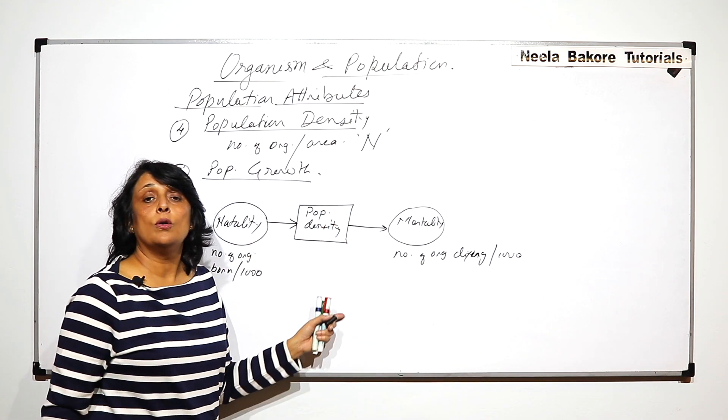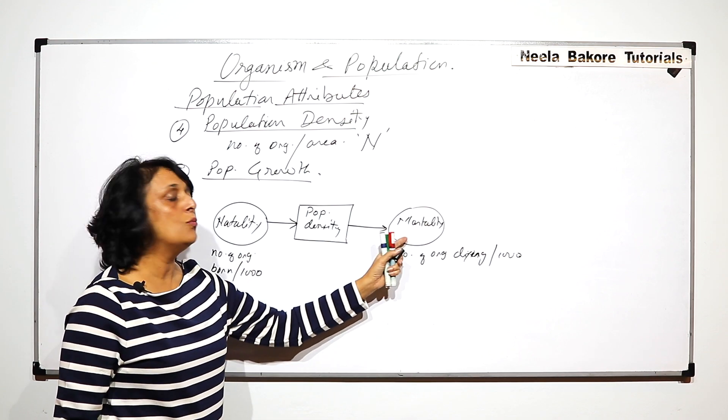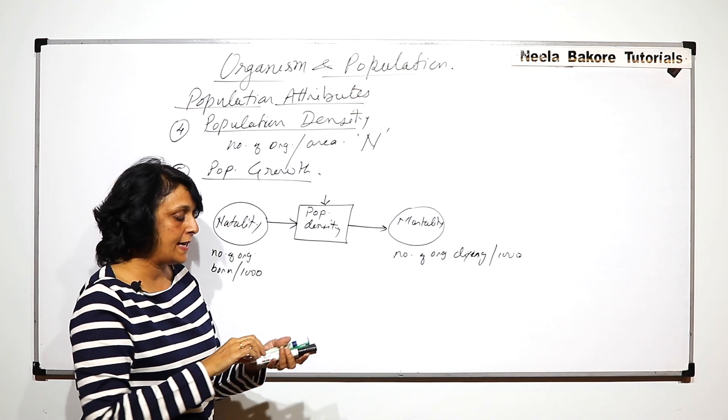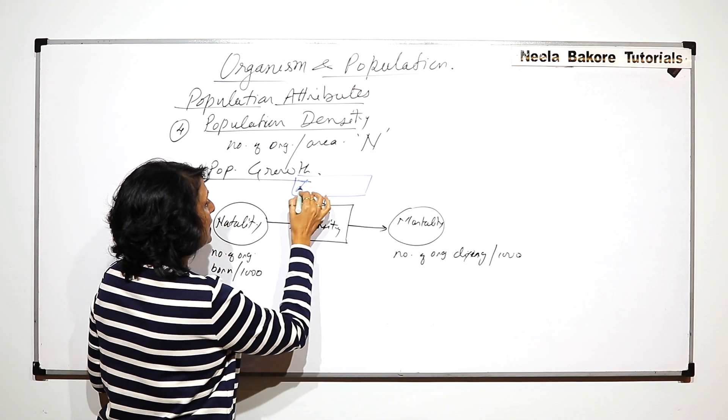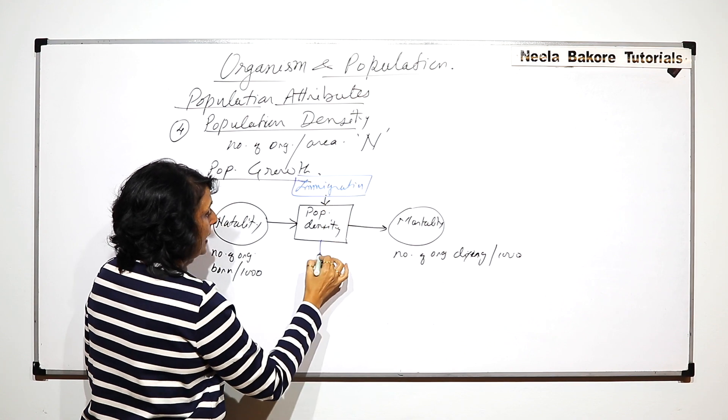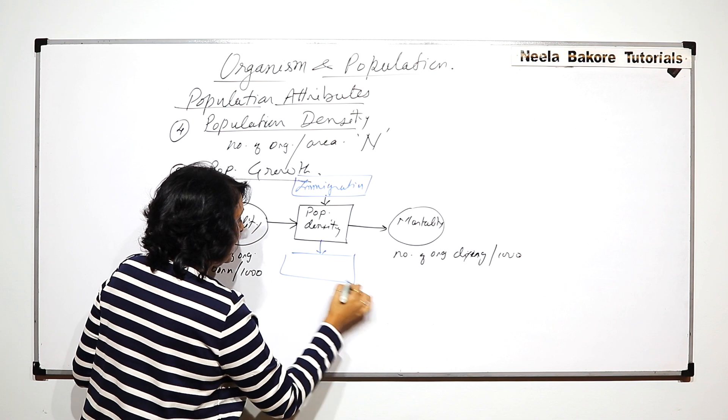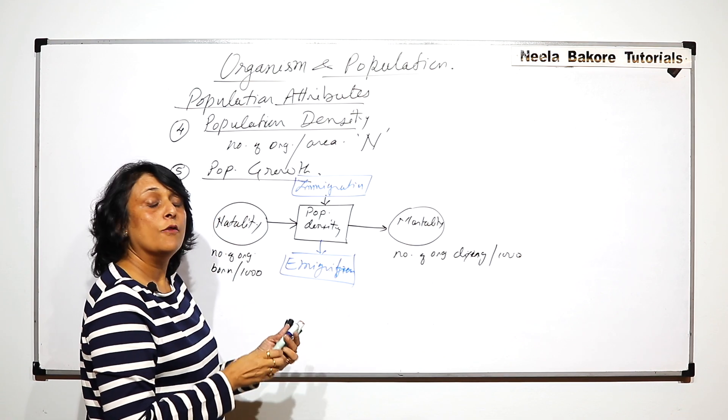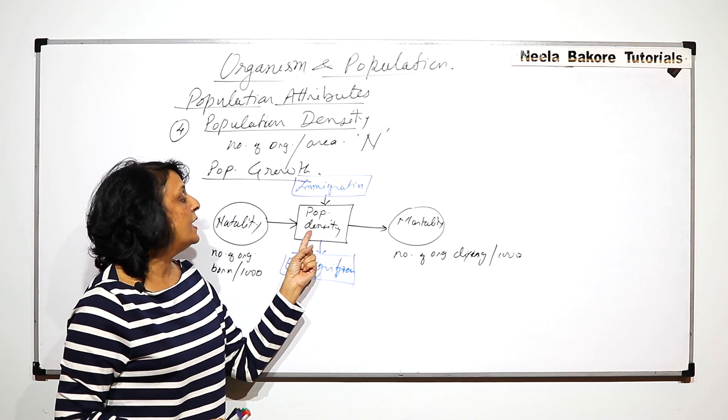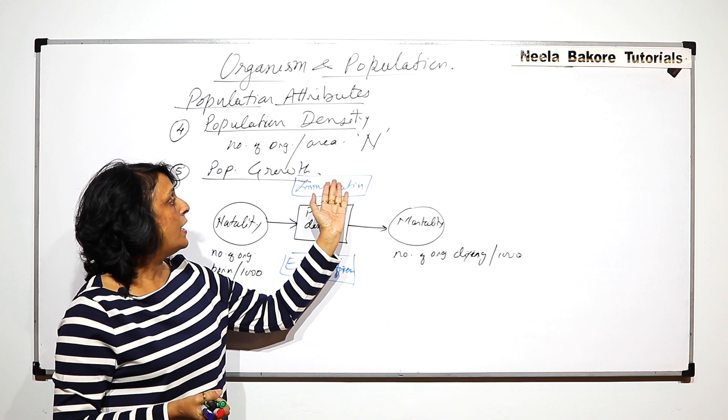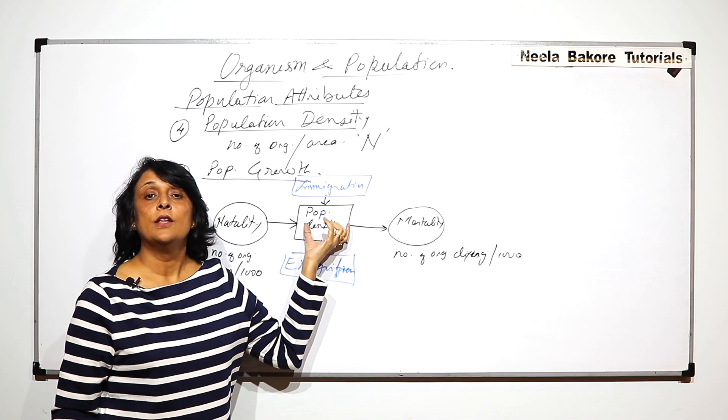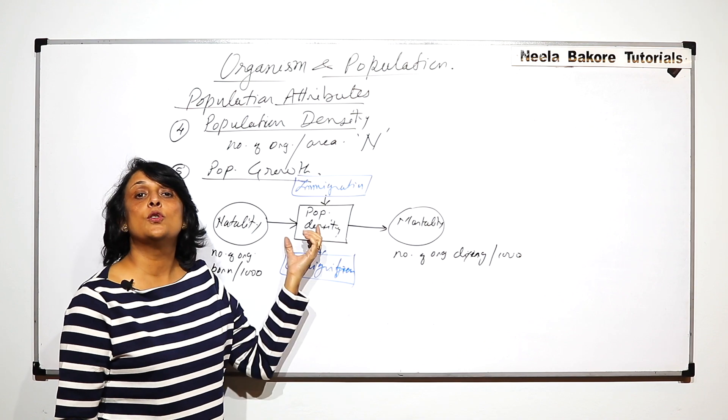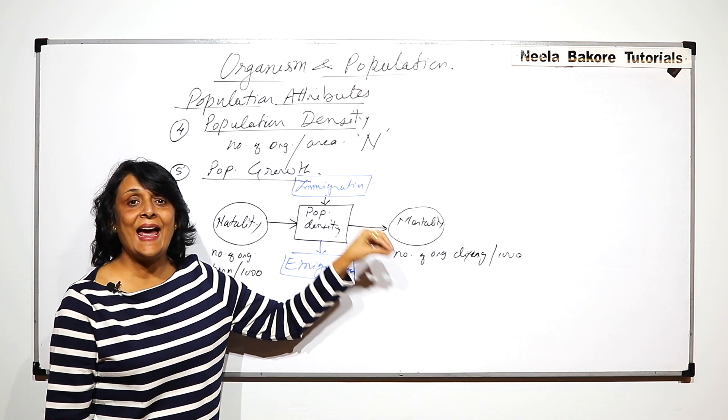Mortality is the number of individuals dying per thousand. So one adds organisms and one eliminates organisms. Now there are two more things: immigration, which would add organisms, and emigration, which would eliminate. If people keep coming into one country, say India, then if there are more immigrants into this population, the population is going to grow. And if there are people moving out of India, then the population would decrease.